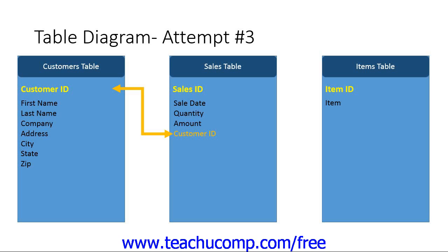Next, you will want to examine the other relationships between the tables. For example, what is the relationship between customers and items? Not every table in the database has to be directly related to every other table. The only way that customers and items are related is that the customer purchases the items when making a sale — the customers' and items' tables do not have a direct connection. However, in a relational database, as long as every table is connected in an appropriate manner, you can find out how they are related through the tables by which they are connected. In summary, the customers are connected to the items, but only through the sales table.